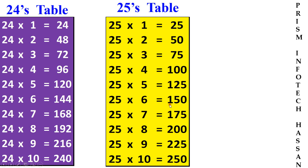25, 6 times 150. 25, 7 times 175. 25, 8 times 200. 25, 9 times 225. 25, 10 times 250.